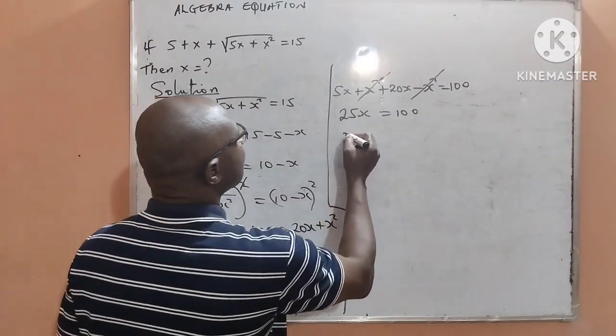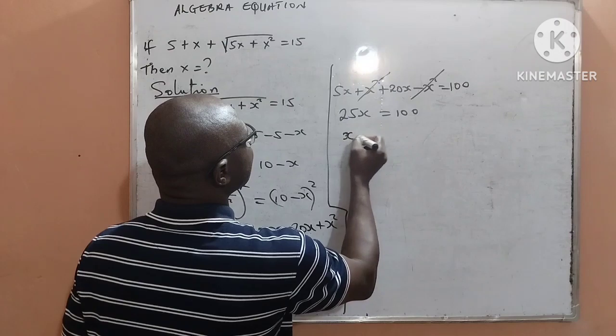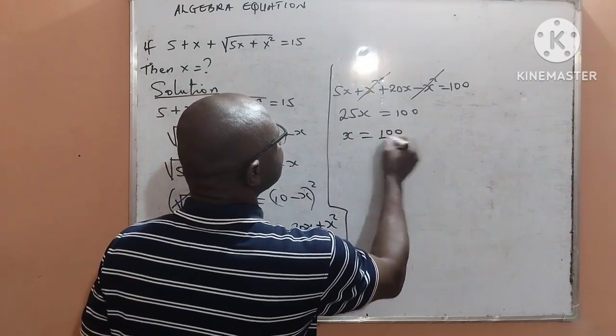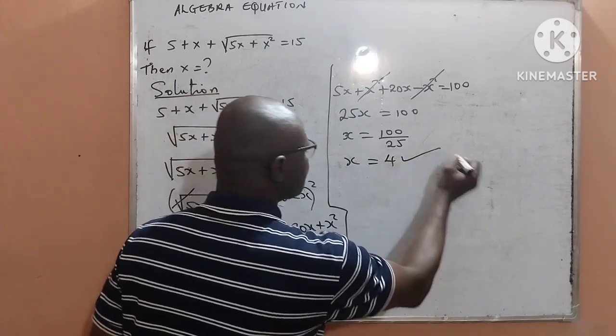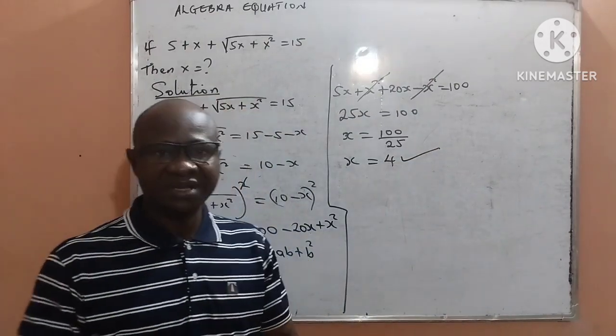And that will give me x equal to 100 divided by 25, meaning that the value of x is equal to 4, and that is the final answer.